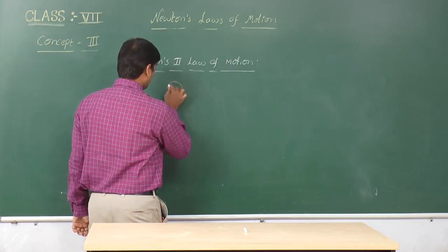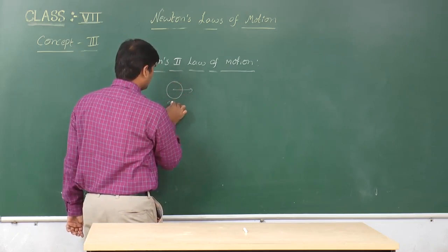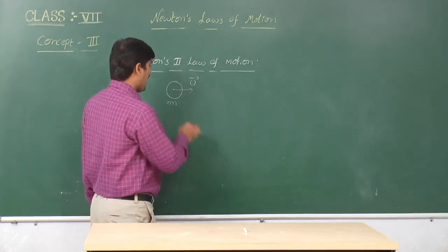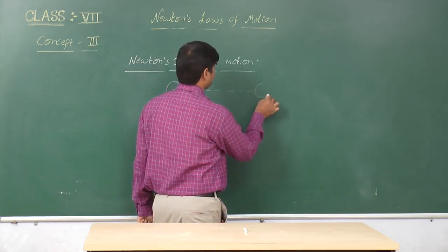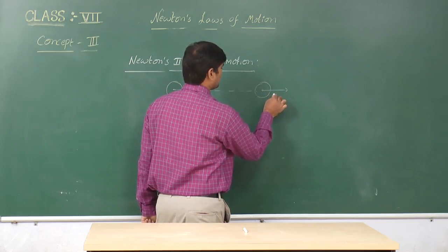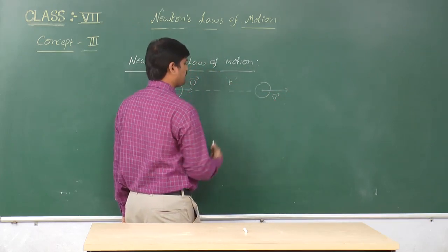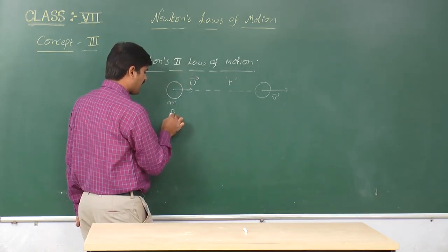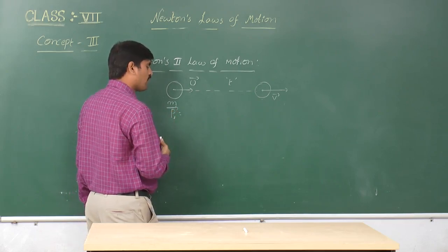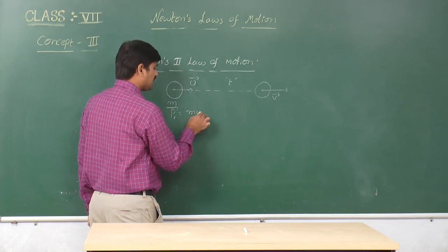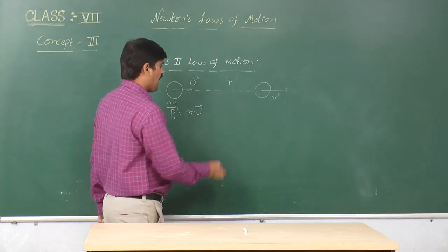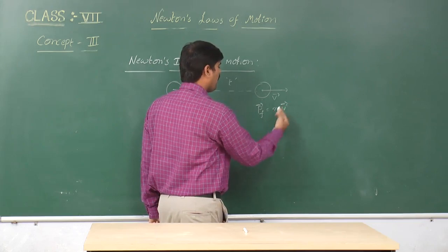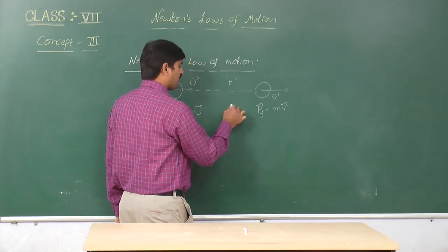Let us consider a body of mass m having initial velocity u. After some time, the body's velocity is v in a time t. Let us assume p_i is the initial momentum of the body, that is equal to m*u. After time t, the momentum of the body p_f is equal to m*v. This occurred in a time duration t.